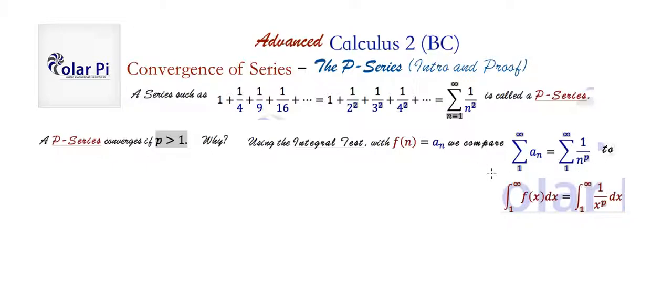And what the integral test says is, if the integral is convergent, then the series will be convergent. So here, what we're going to do is we're going to assume that p is greater than 1, and show that this integral converges, so that we could say that this series converges. So basically, the way we prove why a p-series converges when p is greater than 1 is using the test of convergence called the integral test.